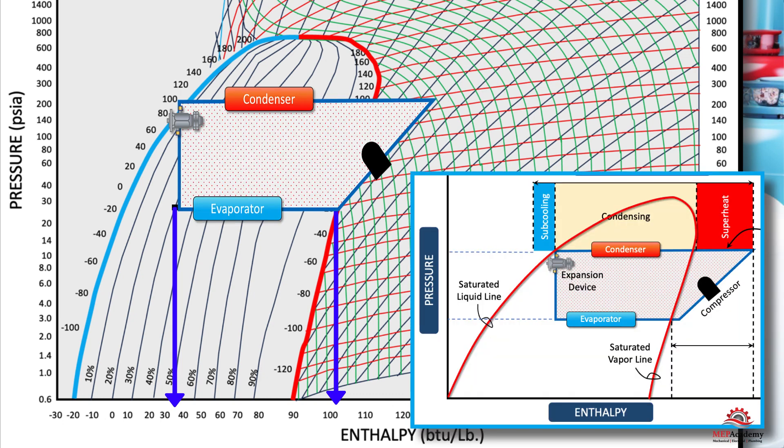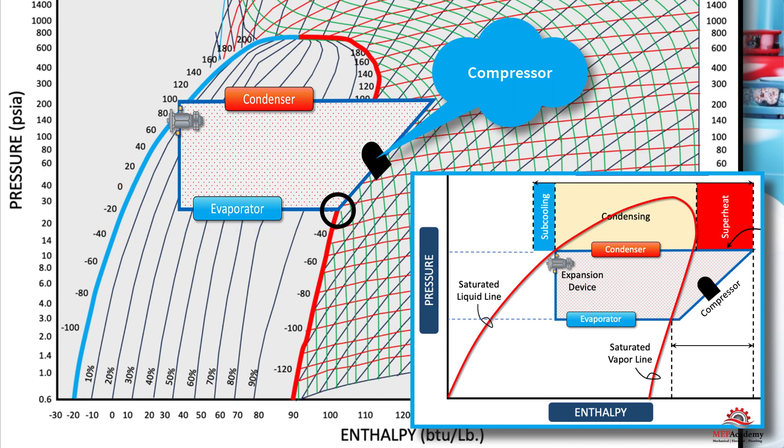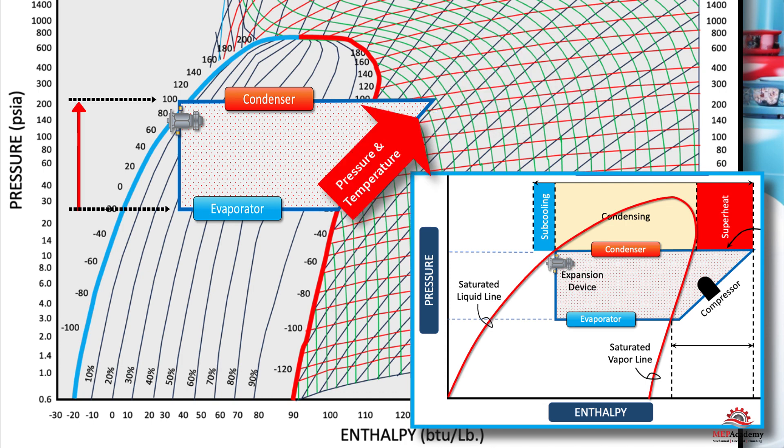The constant temperature and pressure line is where the evaporator turns liquid refrigerant into vapor. When it reaches the saturated vapor line, it should be 100% vapor, as this is where it will enter the compressor, which works only with vapor. The compressor will raise the pressure and temperature up to the condensing temperature and pressure.